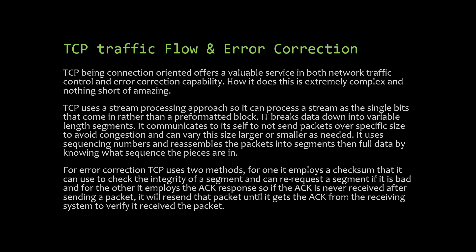For error correction, TCP uses two methods. First, it employs a checksum to check the integrity of a segment and can re-request a segment if it is bad. Second, it employs an ACK response — if an ACK is never received after sending a packet, it will re-send the packet until it gets an ACK from the receiving system to verify it was received.